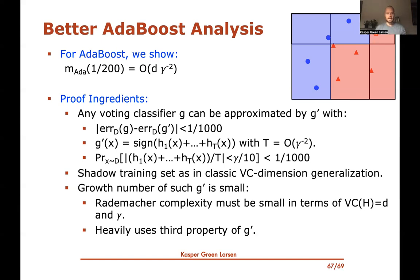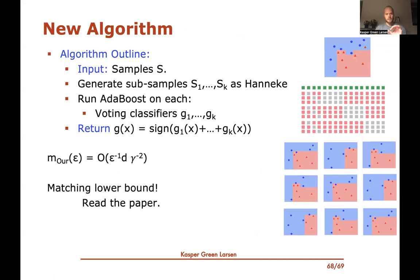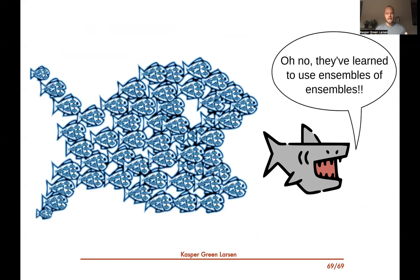In conclusion, our new algorithm — generate subsamples as in Hanneke's optimal PAC learner, then run AdaBoost on each and return the majority — achieves optimal sample complexity O(d/(ε γ²)) for weak-to-strong learning. We also prove a matching lower bound. As my co-author's illustration captures nicely: we train ensembles of ensembles, giving the first optimal weak-to-strong learner. Thanks for listening.